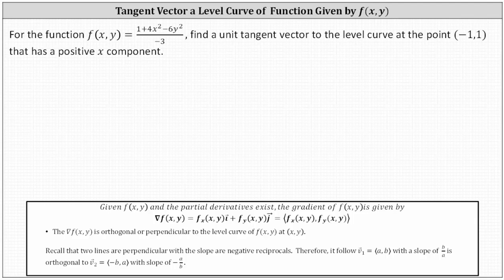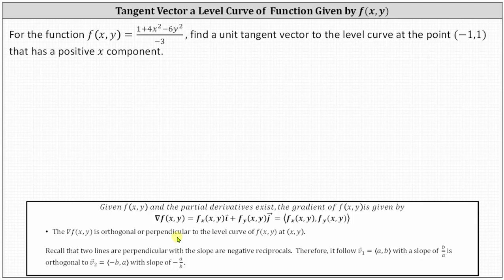For the function f of x comma y, find a unit tangent vector to the level curve at the point negative one comma one that has a positive x component. Recall the gradient vector is perpendicular or orthogonal to the level curve at the point x comma y.